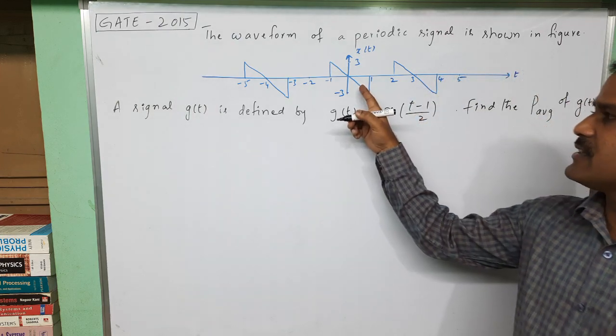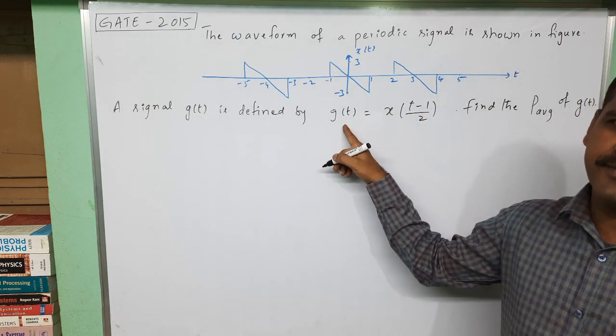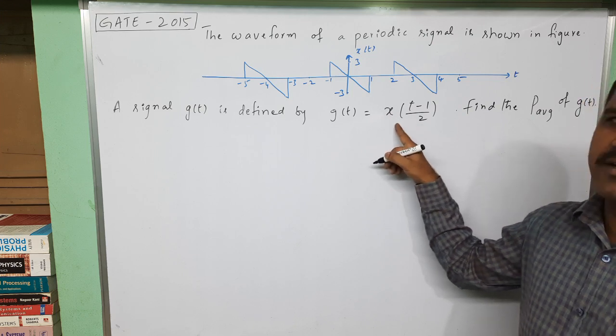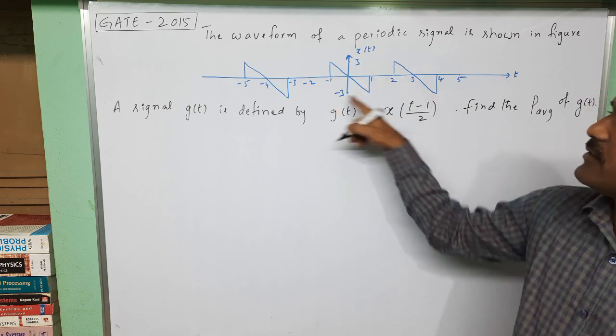This problem is about calculating the power of a signal g(t) which is expressed in terms of x(t) with this expression and the x(t) waveform given like this.